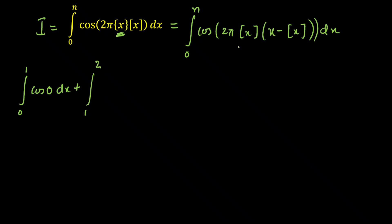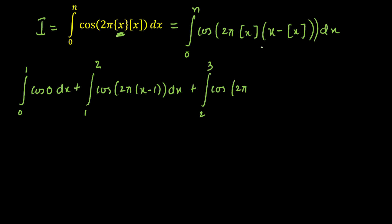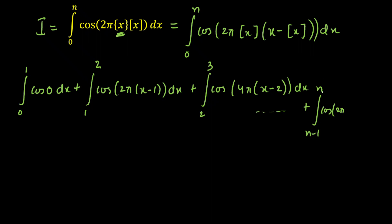The second integration will be from 1 to 2 — stopping at 2 because the function is discontinuous there. Here gif(x) = 1, so we get cos(2π · 1 · (x − 1)) = cos(2πx − 2π). Next, from 2 to 3, gif(x) = 2, giving cos(2π · 2 · (x − 2)) = cos(4πx − 8π). The last integral runs from n−1 to n, where gif(x) = n−1, giving cos(2π(n−1)(x − (n−1))) dx.